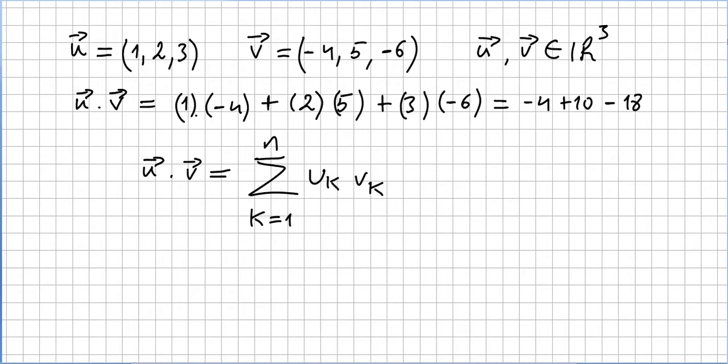So 1 times minus 4 is minus 4, 2 times 5 is 10, and 3 times minus 6 is minus 18. So this will be minus 12. So as you can see, the dot product we are getting a value here. The inner product, you're not getting a vector, you're getting a value.